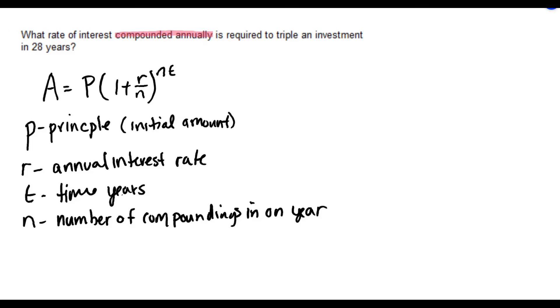In this example, it says compounded annually. So our N will be 1, once a year.